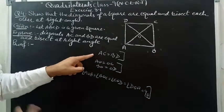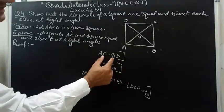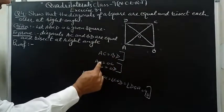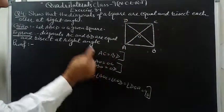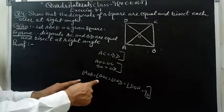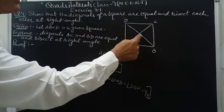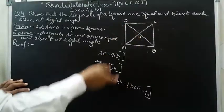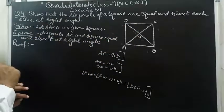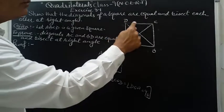To summarize, we have to prove three things: first, diagonals are equal; second, diagonals bisect each other, meaning AO equals OC and OB equals OD; and third, diagonals bisect at right angles, meaning the angle at O is 90 degrees. Let's start with the first part.